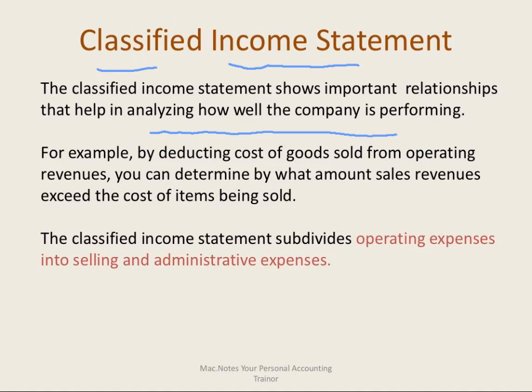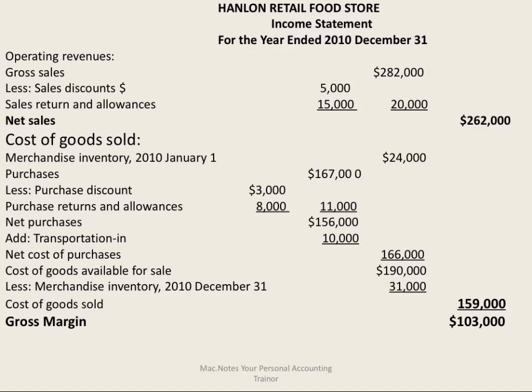For example, by deducting the cost of goods sold from operating revenue, you can determine the amount of sales revenue that exceeds the cost of the items being sold. There are major sections in the classified income statement — operating expenses are classified into those which are selling and those which are administrative.